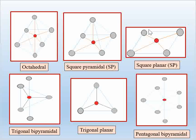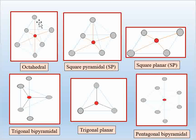The third geometry is square planar geometry. If we remove two ligands from the axial position of the octahedral complex, we get the square planar complex. Alternatively, if we remove one ligand from the square pyramidal geometry, we also get the square planar geometry.